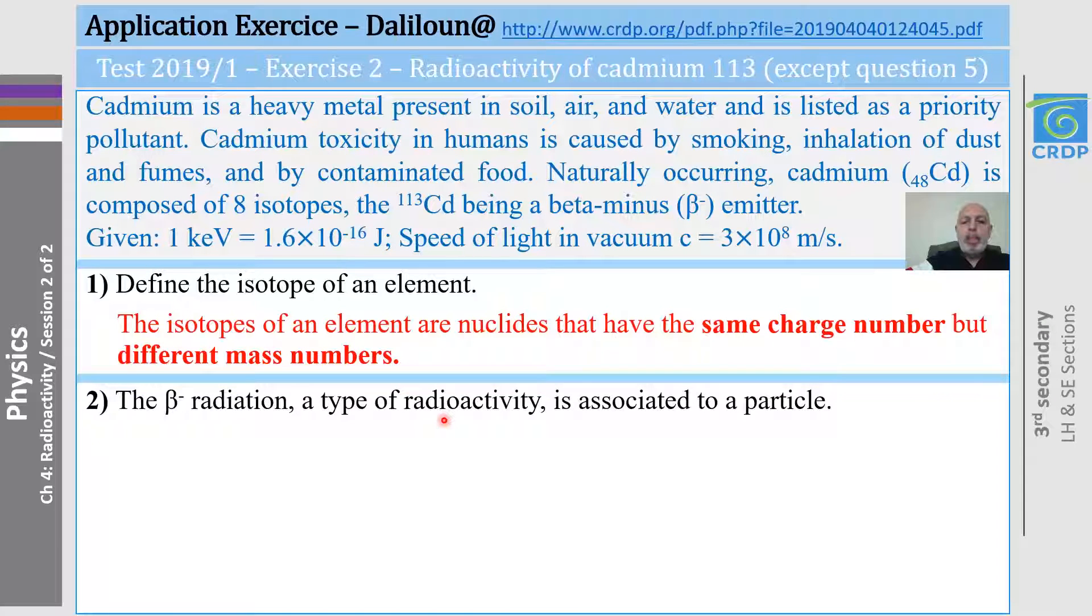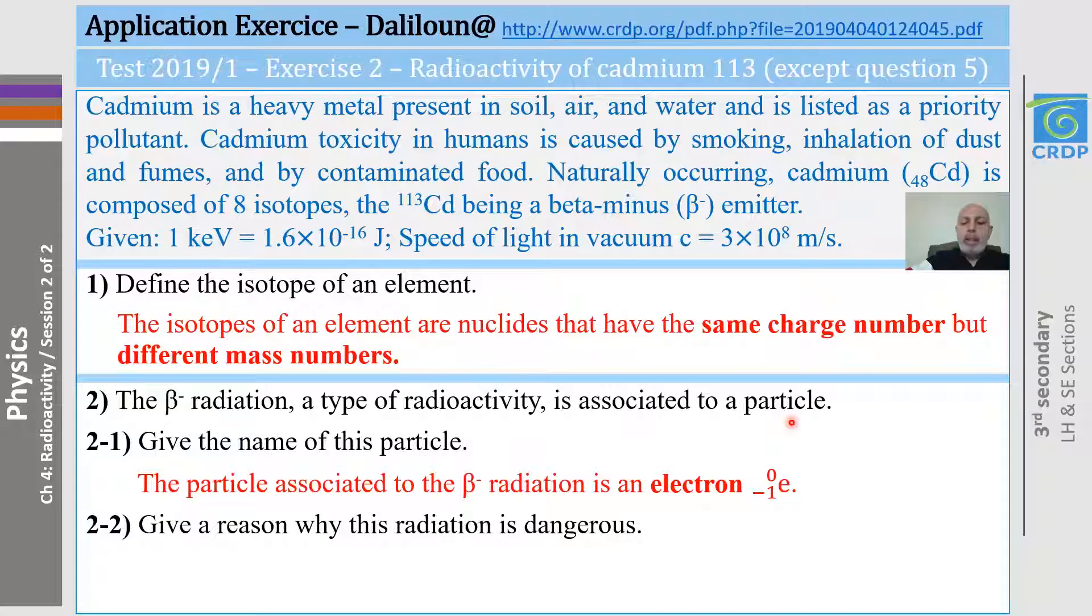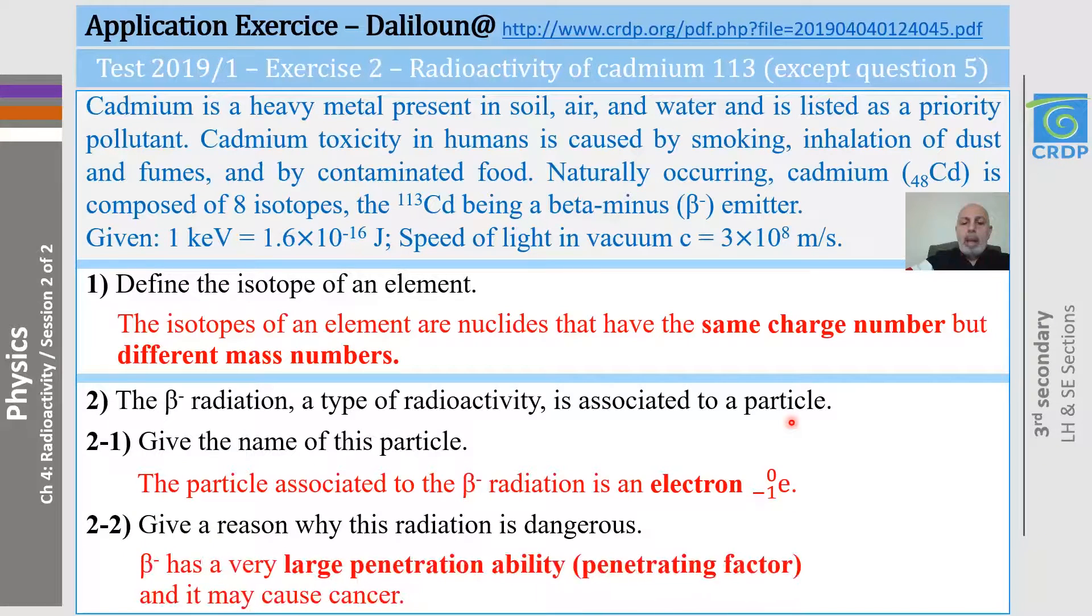Now, for the second question, the beta minus radiation, a type of radioactivity, is associated to a particle. Give the name of this particle. I remind you that we did it at the beginning of this session too, and I reminded you about this particle. It's an electron. Give a reason why this radiation is dangerous. Again, we talked about the large penetration ability or penetration factor, and this may cause cancer.